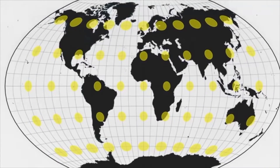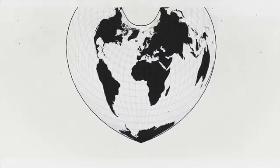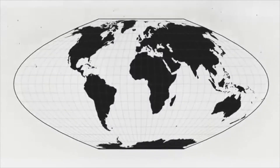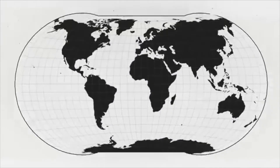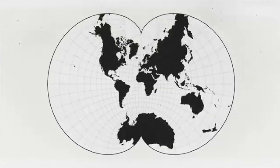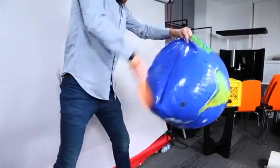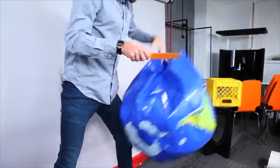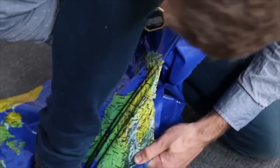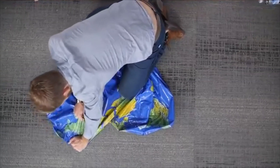But the fact remains that there's no right projection. Cartographers and mathematicians have created a huge library of available projections, each with a new perspective on the planet, and each useful for a different task. The best way to see the Earth is to look at a globe. But as long as we use flat maps, we'll have to deal with the trade-offs of projections. And just remember, there's no right answer.